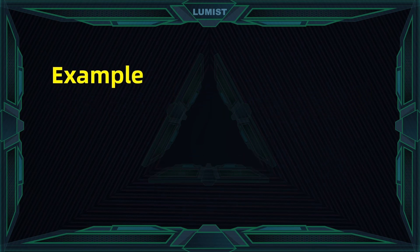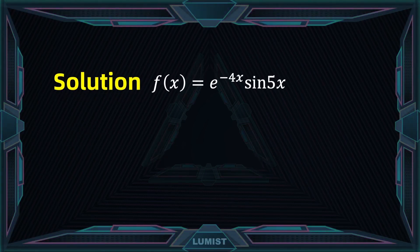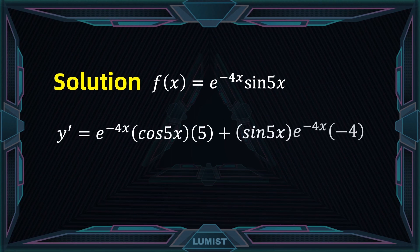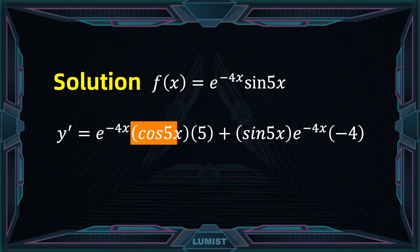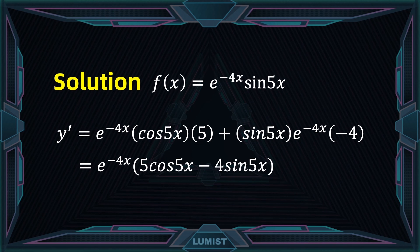Here is a simple example: find the derivative of e to the power of (−4x) times sin(5x). Using the product rule, the derivative of sin(5x) is cos(5x) times 5, multiplied by e^(−4x); and the derivative of e^(−4x) is e^(−4x) times (−4), multiplied by sin(5x). Simplifying, we factor out e^(−4x) to get e^(−4x) times (5 cos(5x) − 4 sin(5x)).